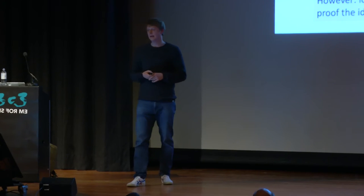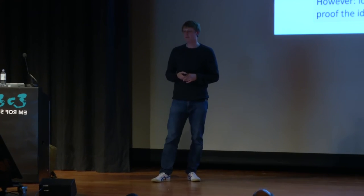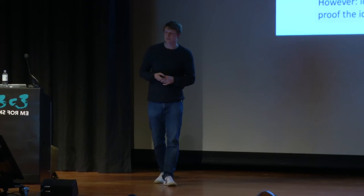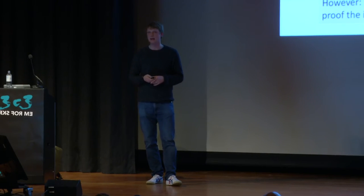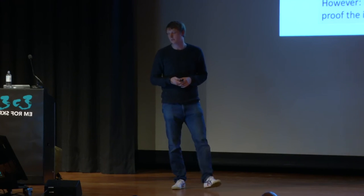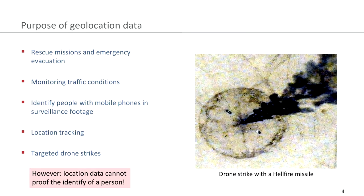However, I want to point out that these data are not suitable to prove the identity of a person. So if somebody is conducting a drone strike based on this data, then they are actually not knowing who they are going to kill. On the right side, you see an image of an explosion site from a Hellfire missile, which is usually used by these drones. You can approximate that the blast radius is around 20 meters.